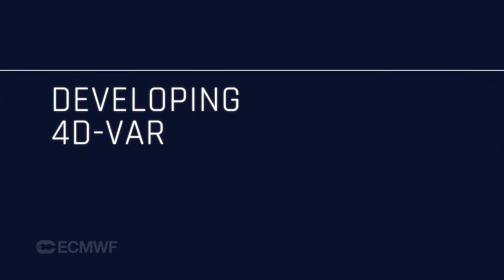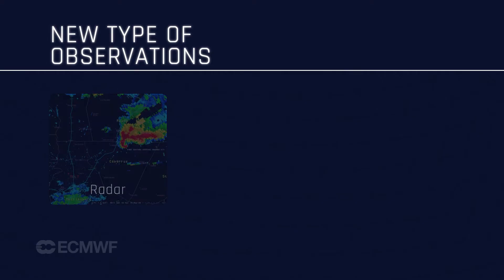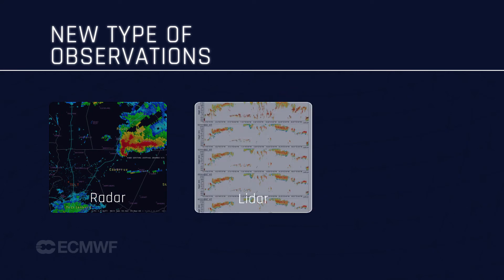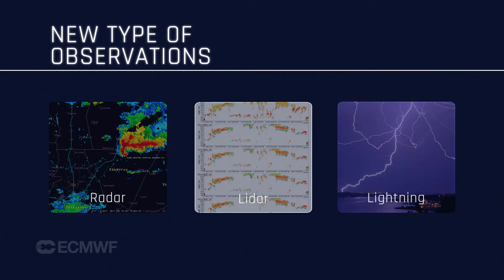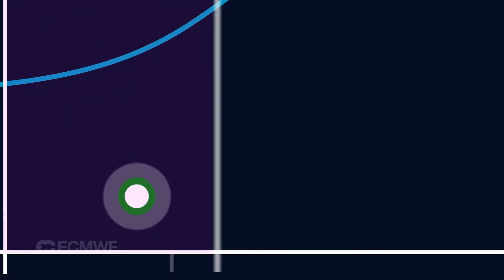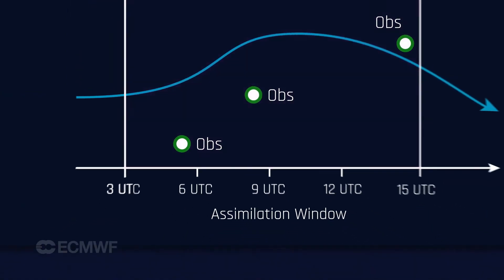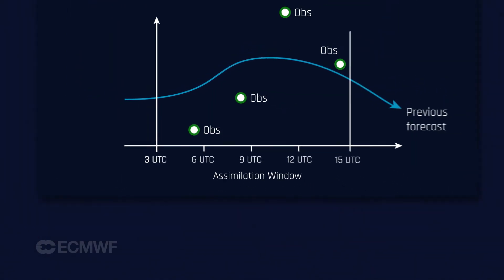In the near future there will be a very large class of new types of observations. They involve radar measurements, lidar measurements, and even lightning measurements. These hundreds of millions of observations need to be brought together in a consistent way, and 4DVAR is the only system that can do that.